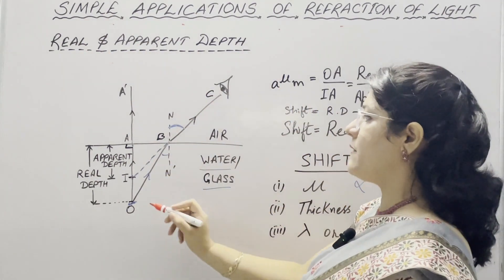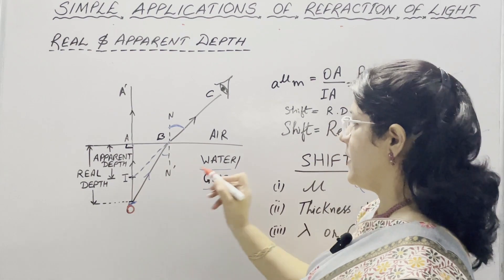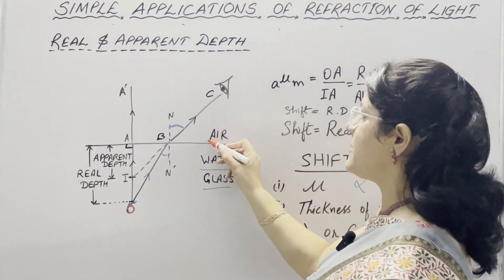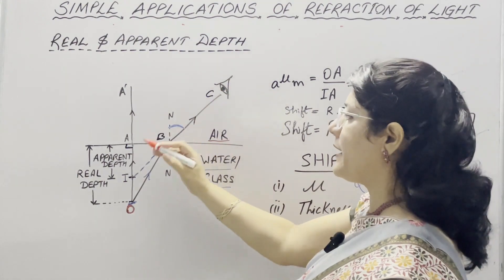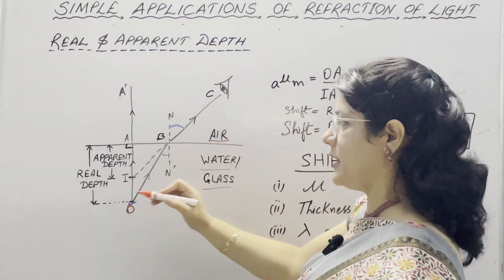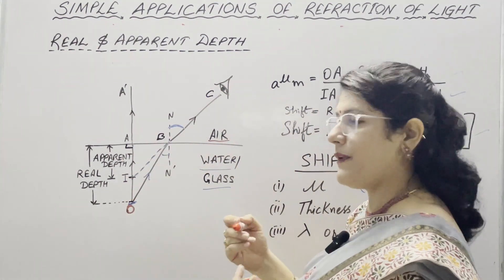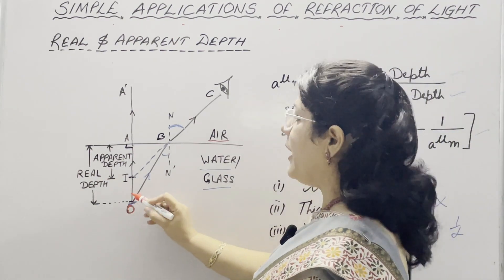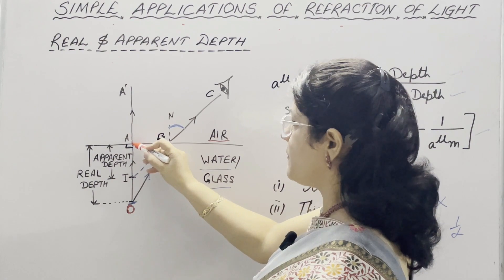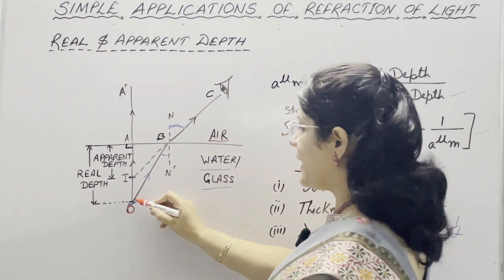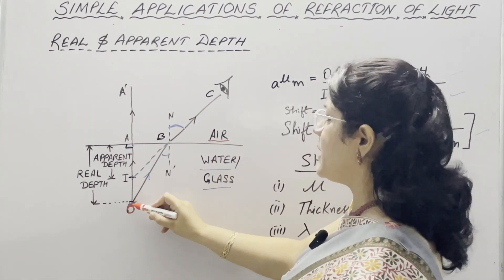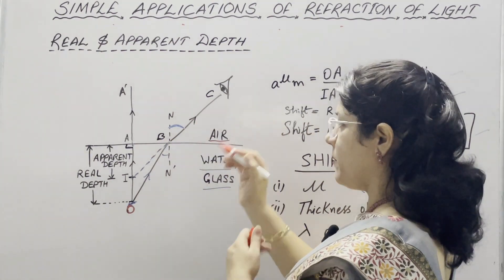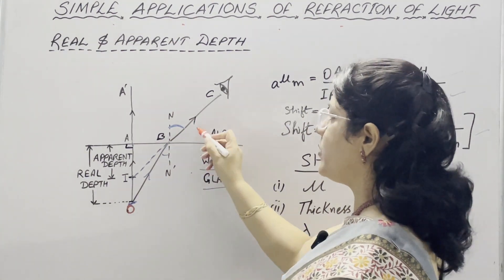An object when placed in a denser medium — it means water or glass — when viewed from a rarer medium, it means air, it appears to be at a depth lesser than its original depth, and this is because of refraction of light. A ray which is incident normally on the surface goes undeviated, but a second ray which is making an angle with the surface is bending away from the normal because the ray is going from denser to rarer medium.